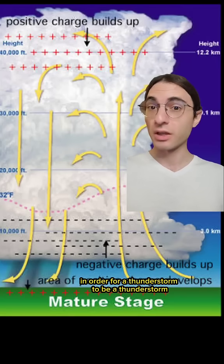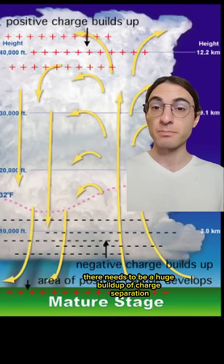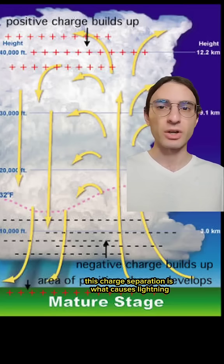In order for a thunderstorm to be a thunderstorm, there needs to be a huge buildup of charge separation. Inevitably, this charge separation is what causes lightning.